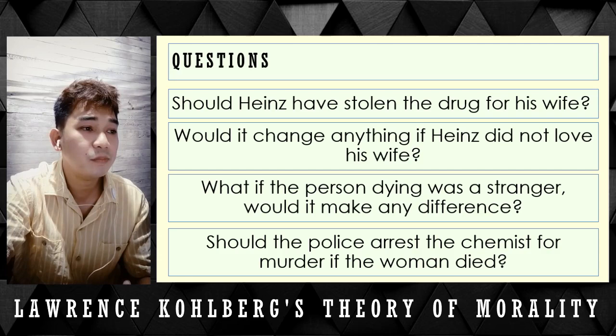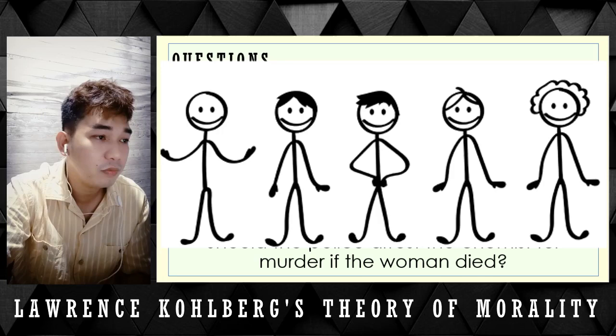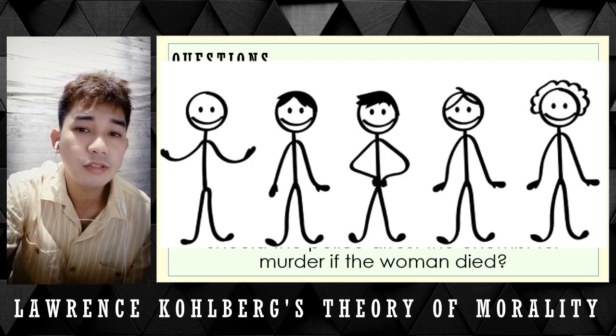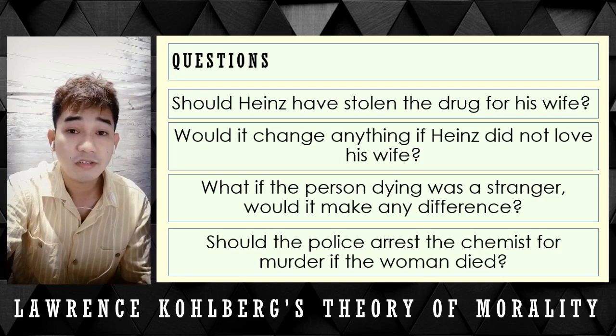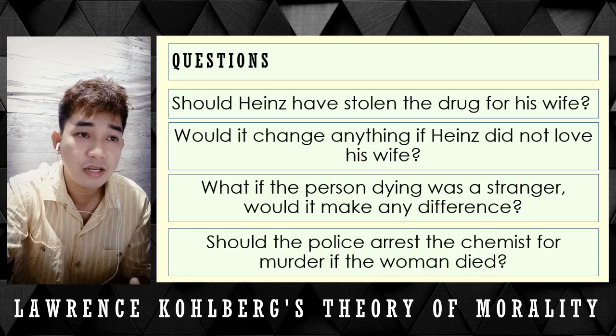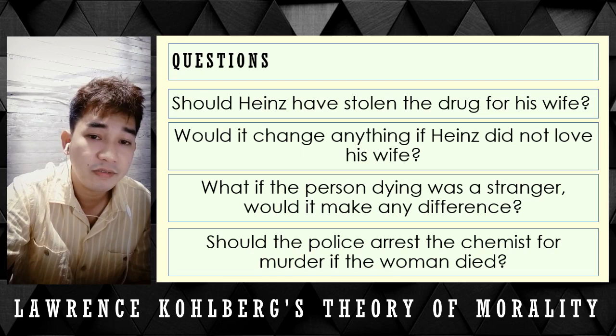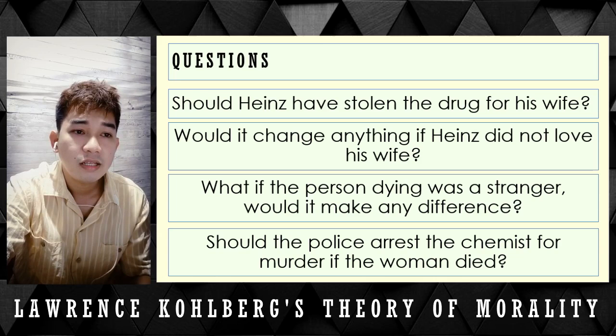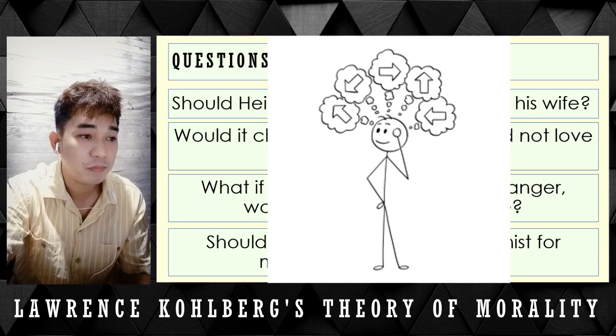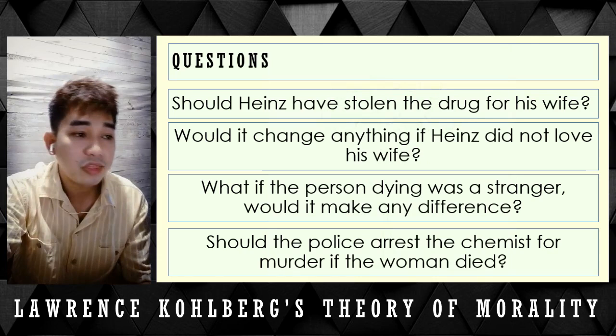Kohlberg hoped to discover how moral reasoning changed as people grew older. His research sample comprised 72 boys aged 10 to 16 years old, with 58 of them followed up at 3-year intervals for 20 years. He found out that the stages of moral development of his participants changed as they grew older.